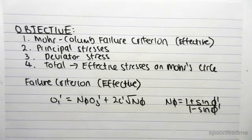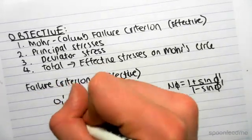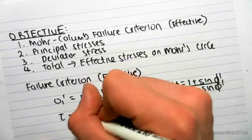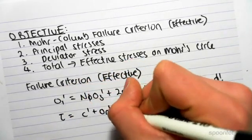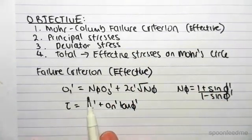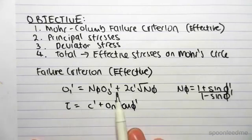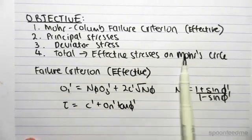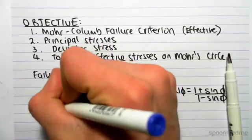So as you can see, just like the other formula where tau equals c dash plus sigma n dash tan phi dash, we're relating the principal stresses. Now we're relating them to the cohesion and the frictional angles. So these equations are pretty much saying very similar things.